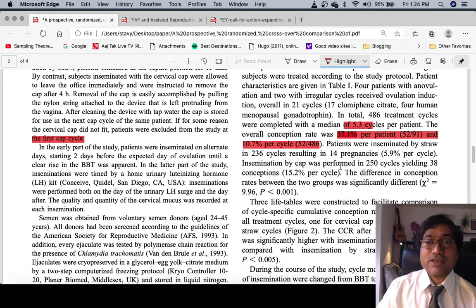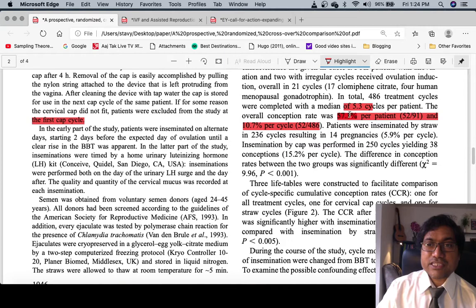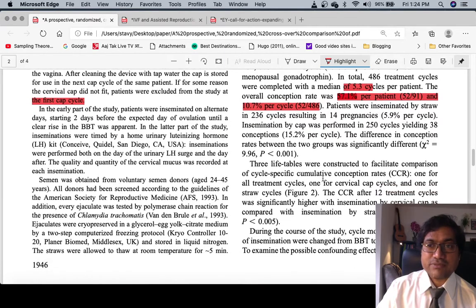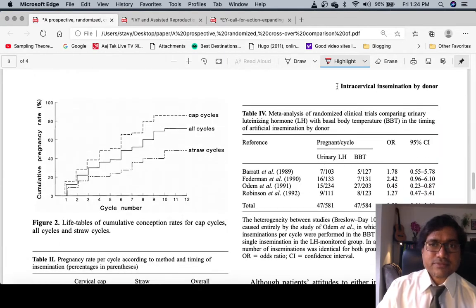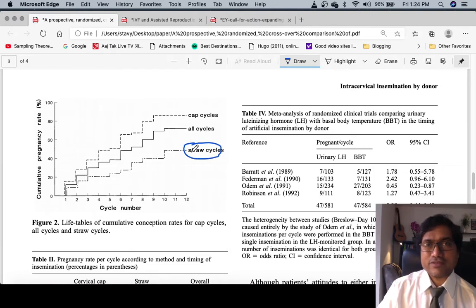This is really amazing, right? 57.1% success - a fantastic number. Now they have very nicely compared this to the straw. Straw is the IUI catheter method which is usually used by medical professionals.